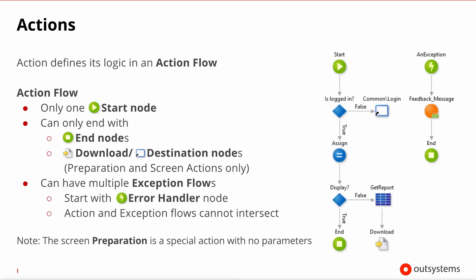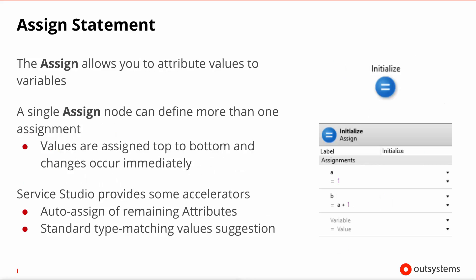One of the most common statements you will find in an action flow is an assign statement. An assign statement, as its name indicates, allows you to assign values to variables. Inside an assign statement you can have several sub-statements and they are executed from top to bottom. The OutSystems platform gives you a few accelerators when you need to bulk assign attributes, for example, of one entity to another entity.